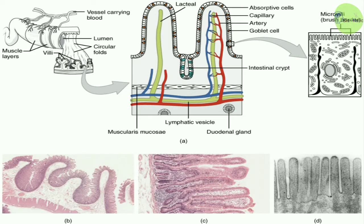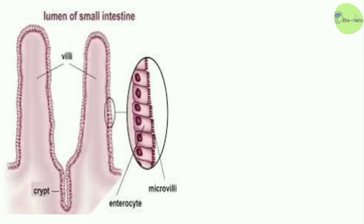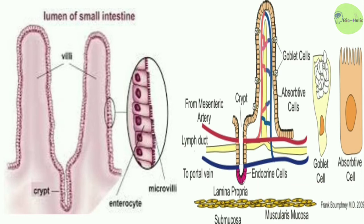These villi and microvilli increase the surface area for absorption and also slow down the passage of contents through the small intestine, which facilitates absorption. The villi are finger-like projections of the mucous membrane seen throughout the length of the small intestine. Each villus is covered by a single layer of columnar epithelial cells called enterocytes.